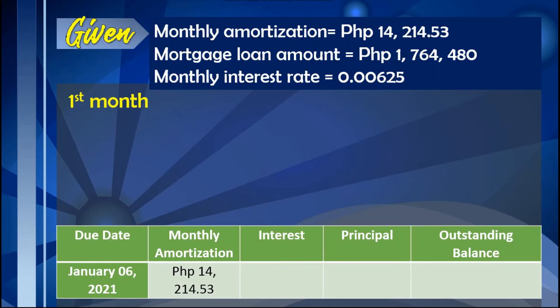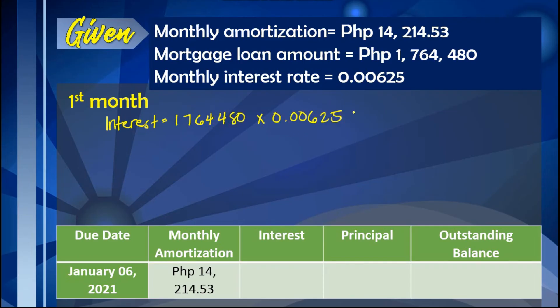Going back to our example: the monthly amortization is $14,214.53, the mortgage loan amount is $1,764,480, and the monthly interest rate is 0.00625. Keep in mind that even though the monthly amortization is fixed, the principal and interest amounts paid each month vary. For the first month, to find the interest we multiply the mortgage loan amount by the monthly interest rate. The result is $11,020 — this is the interest paid in the first month.